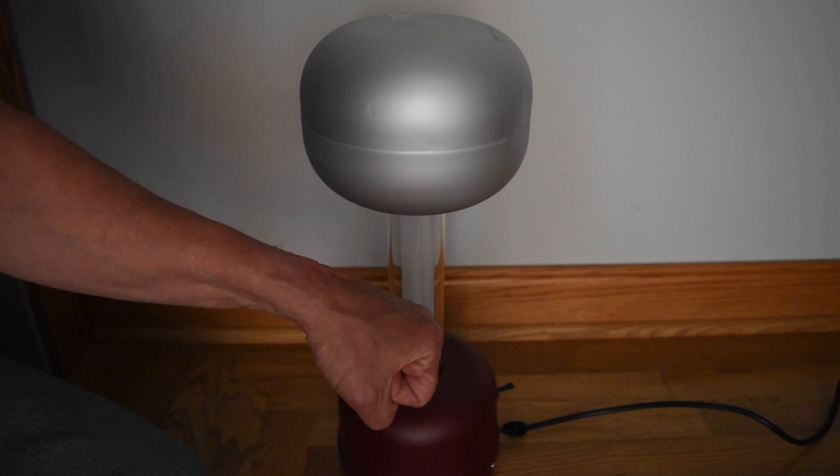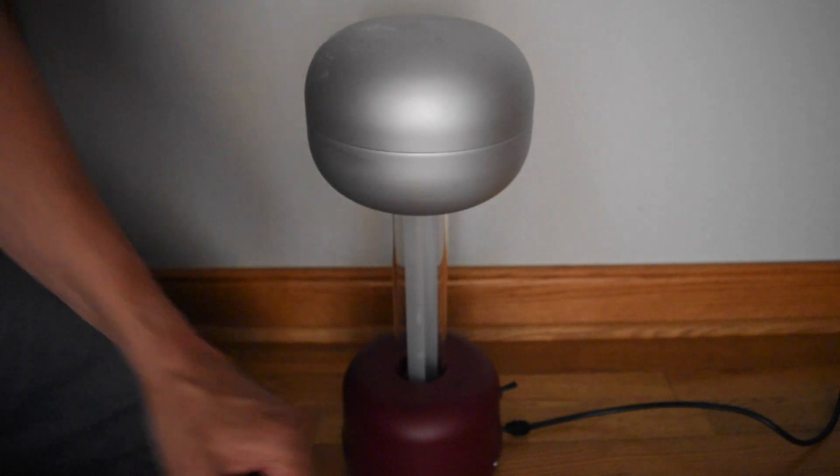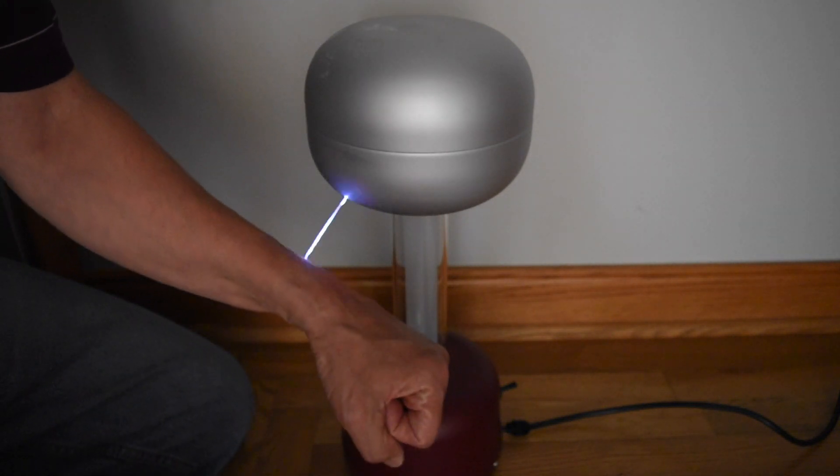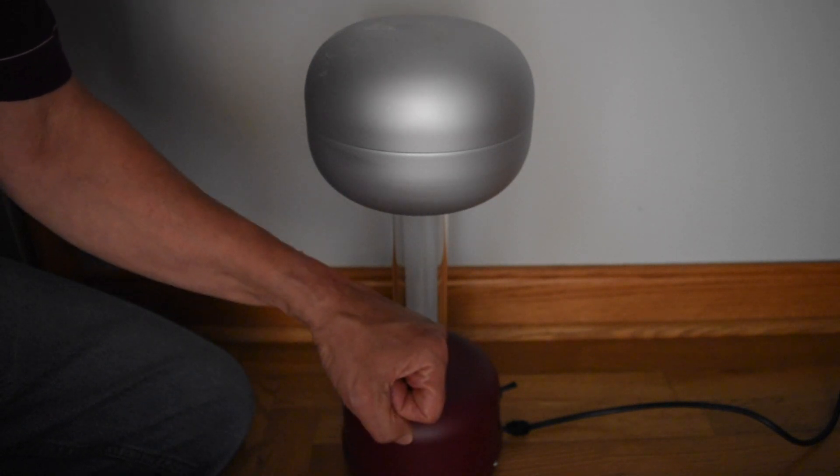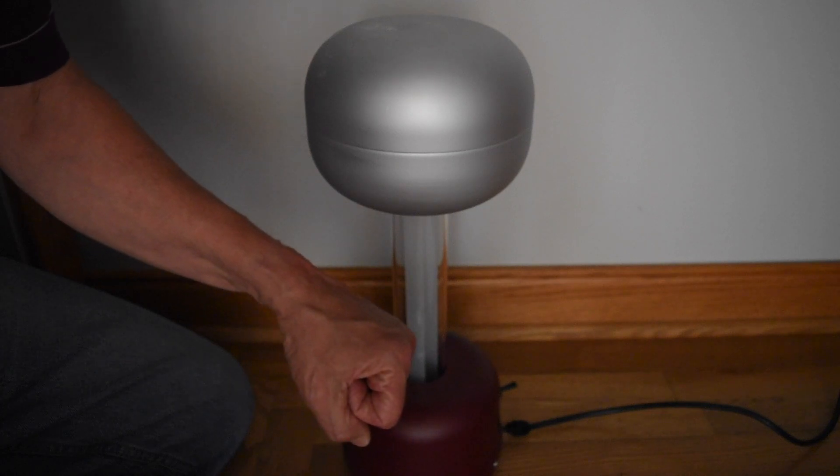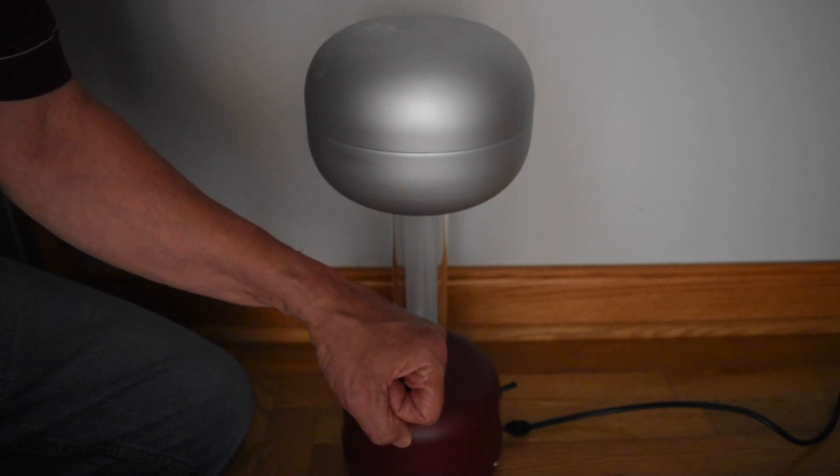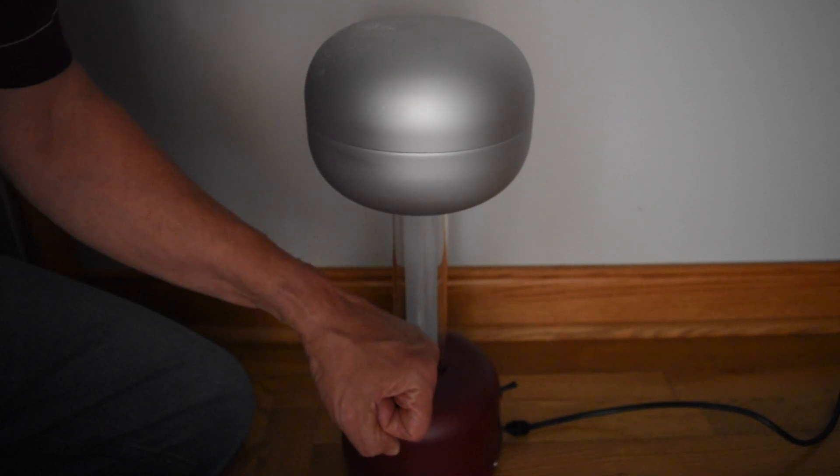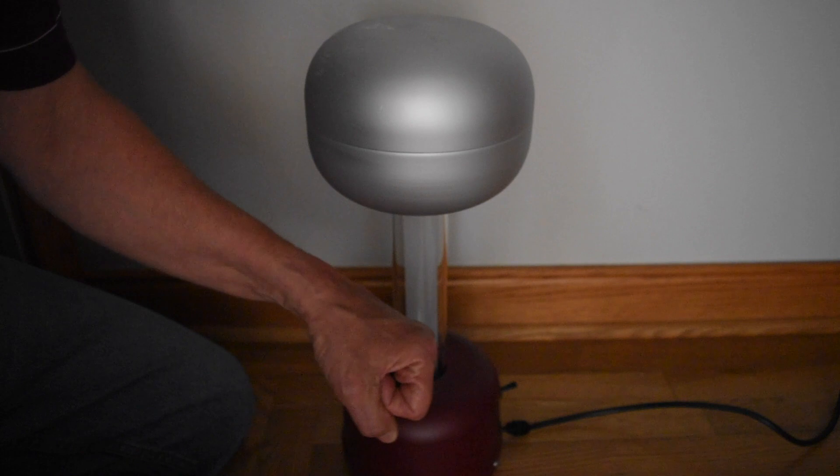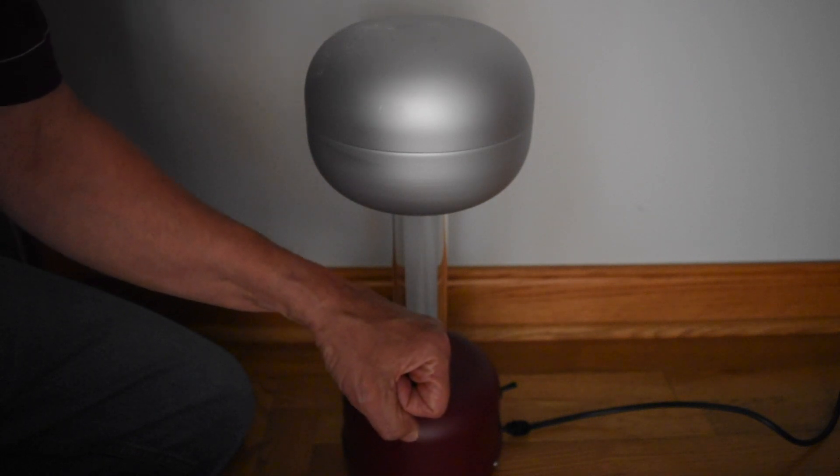The operation of the Van de Graaff generator is based on the triboelectric effect. If you put two materials together, you will have a transfer of electrons from one to the other. For instance, if you put glass and rubber together, initially you're going to have transfer of electrons from the glass to the rubber.